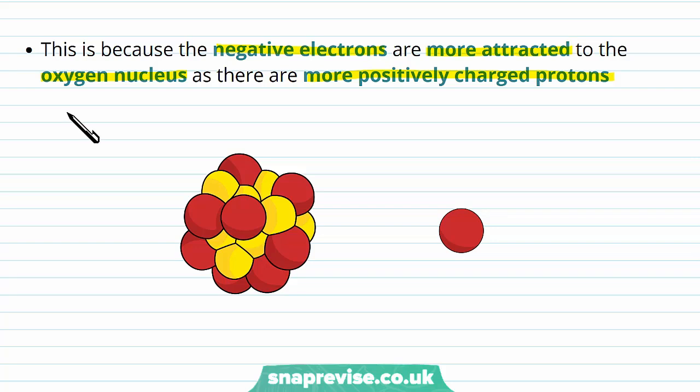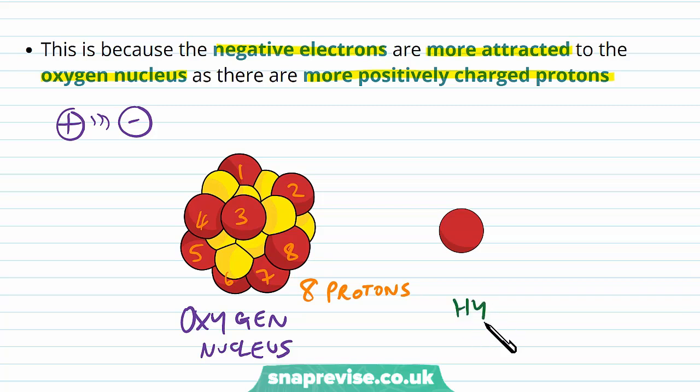Remember the rule in chemistry is that positive always attracts negative. But if you have two of the same charges, they repel each other. Here's the oxygen nucleus, and you can see that there are eight protons. This gives it the signature of being an oxygen atom. Whereas the hydrogen nucleus is much, much smaller, and it only contains one proton. Protons are positively charged.